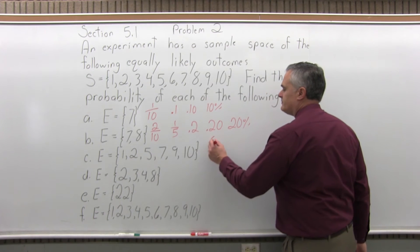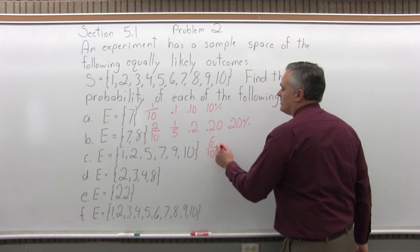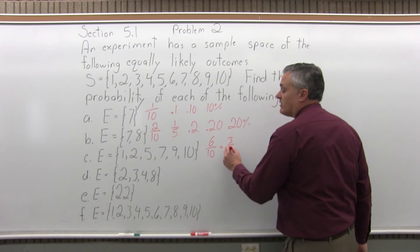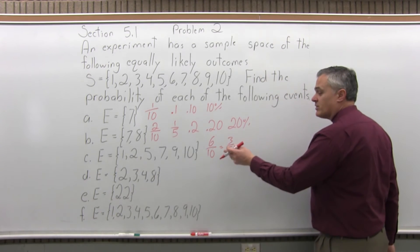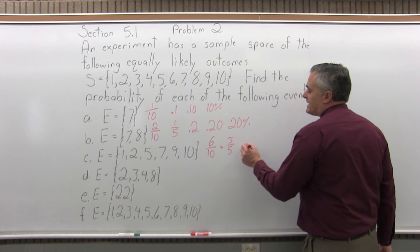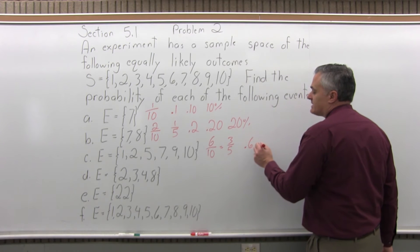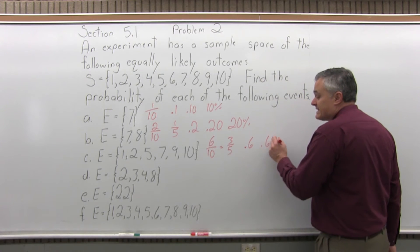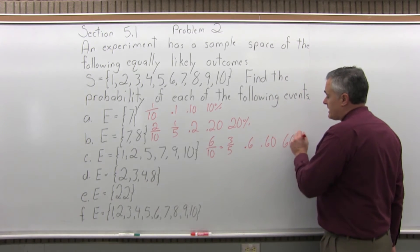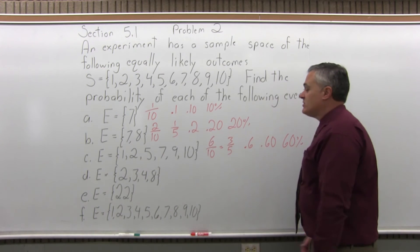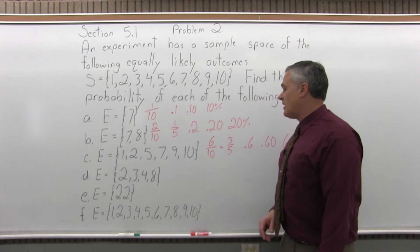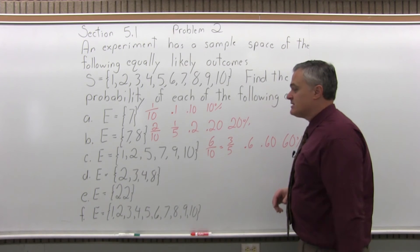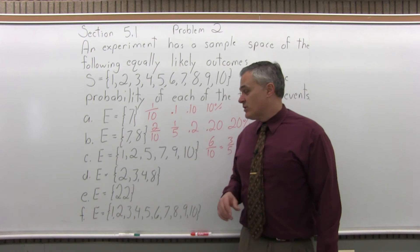So it would be 6 over 10, which again, you could reduce, if you like, you don't have to, to 3 fifths, right? Dividing both in half. Or you could say that it is 0.6, or 0.60, or 60%. Again, they all mean the same thing. If you stop at 6 over 10, that's fine. Some people like percents. You could do any one of those.